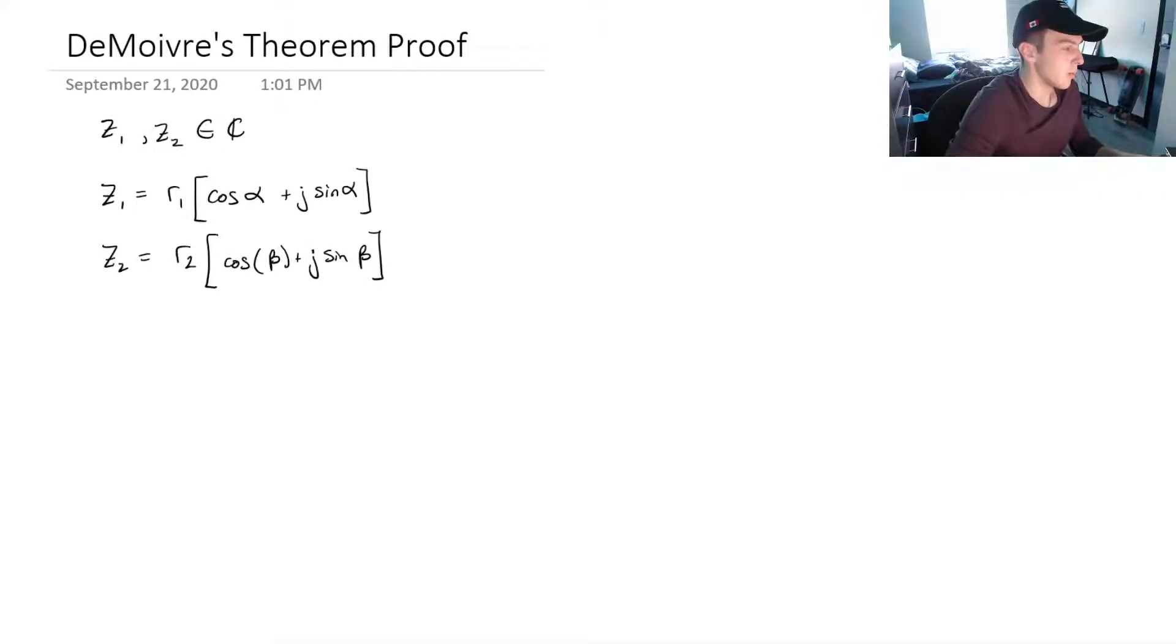So, we know that for DeMoivre's Theorem, it's when we have something to the exponent, so we're multiplying it together.